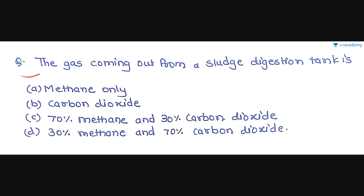The next question is: the gas coming out from a sludge digestion tank is — option A is methane only, option B is carbon dioxide, option C is 70% methane and 30% carbon dioxide, and option D is 30% methane and 70% carbon dioxide. The gas is not only methane but also carbon dioxide, specifically 70% methane and 30% carbon dioxide. Please do remember these percentages. So option C is the correct answer.